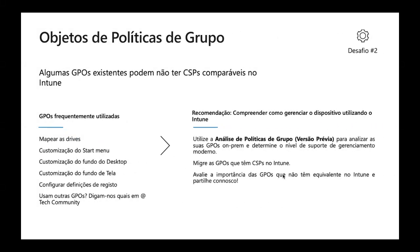O segundo cenário tem a ver com objetos de políticas de grupo. Quando foi possível ingressar os dispositivos na Active Directory local, tornou-se possível configurar permissões, políticas de segurança e políticas de grupo. Estas políticas de grupo frequentemente têm a ver com o mapeamento de drives, customização do fundo do desktop, do start menu. Apesar de no Intune estarmos a fazer um exercício mensal, às vezes até diário, de adicionar suporte a CSPs do Windows, por vezes é possível que não haja equivalente no Intune para as políticas de grupo que estão a utilizar hoje em dia.